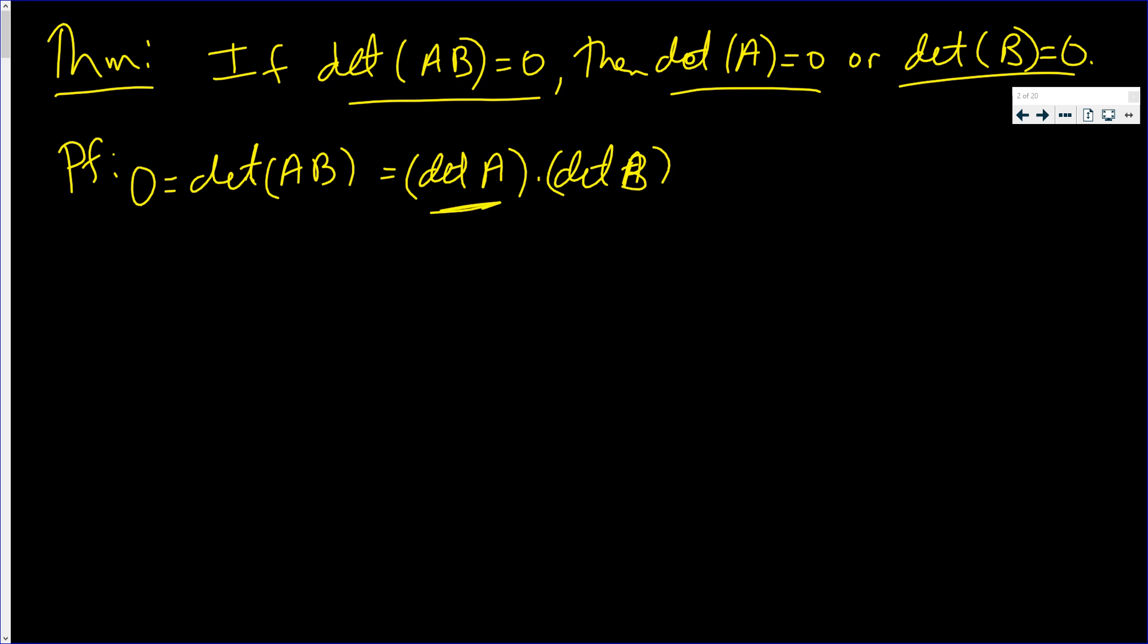Well, these are real numbers and they multiply out to zero. So this implies that the determinant of A is zero or the determinant of B is zero. For a product of two real numbers equals zero, then at least one of them is zero.